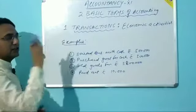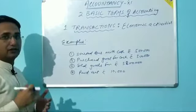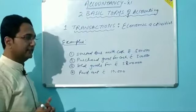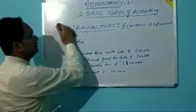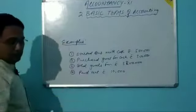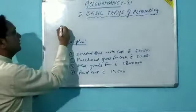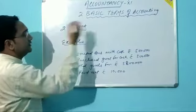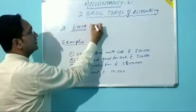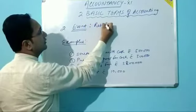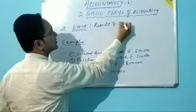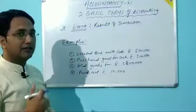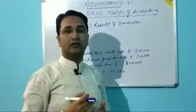Transactions are the economic activities which make changes in the financial position of a business. Now the second term is 'event'. What is an event? Event means the consequence or result — the result of a transaction. The consequence or result of a transaction is known as an event of a business.